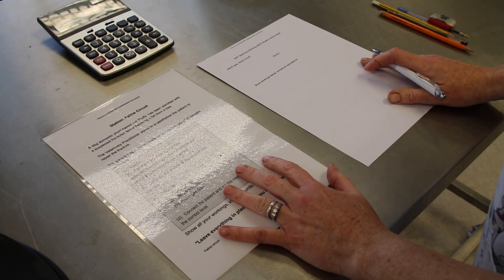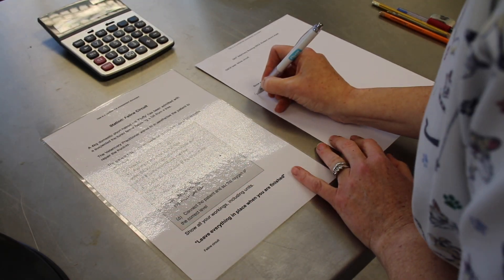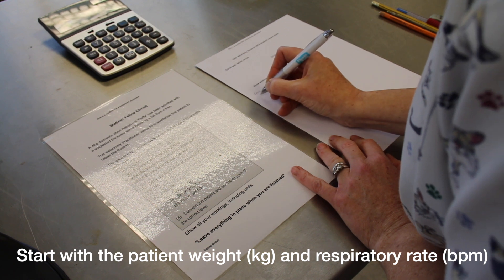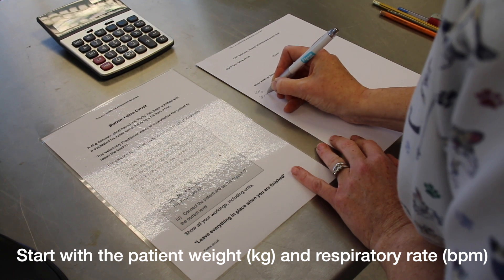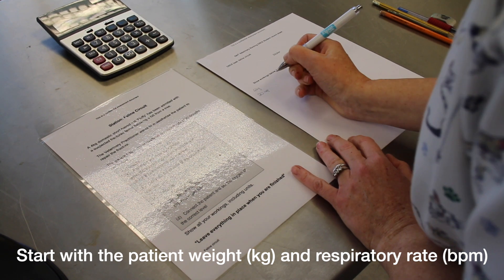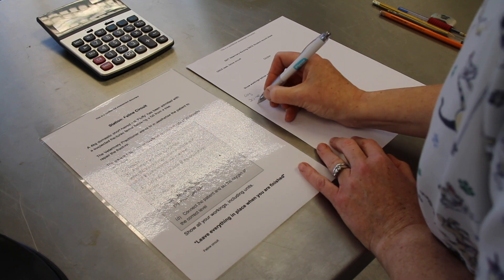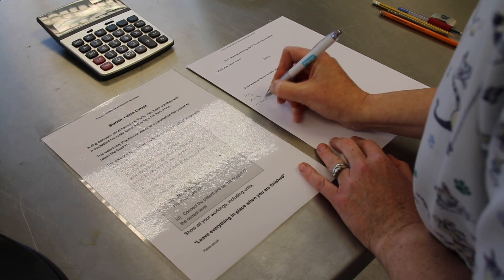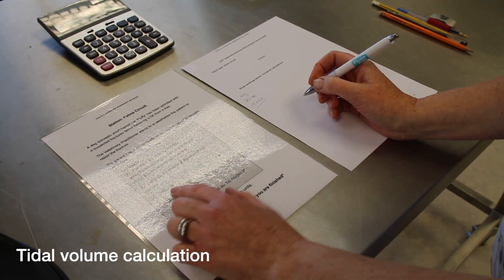Okay, so this time we have our feline circuit. We have a 4-kilogram cat and we have 20 respirations. We're going to use the T-piece, so the first thing we do is calculate the tidal volume.